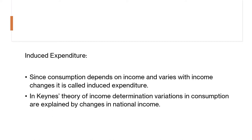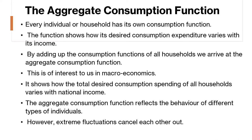In Keynes' theory of income determination, variation in consumption could be explained by changes in national income. Coming to the aggregate consumption function, we have to understand that every individual or every household has got its own consumption function, and the function shows how desired consumption expenditure varies with income. By adding up the consumption function of all the households in the economy, what we get is the aggregate consumption function, which is the interest to macroeconomics. It shows how the total desired consumption spending of all households varies with national income.